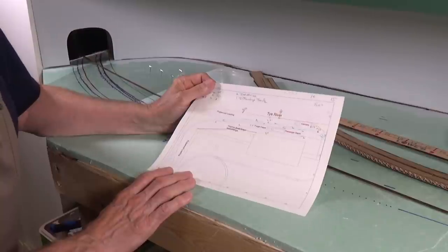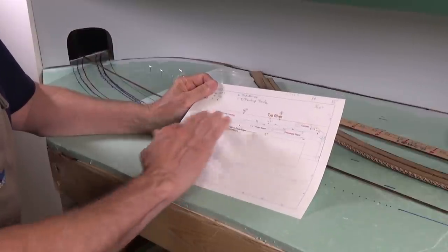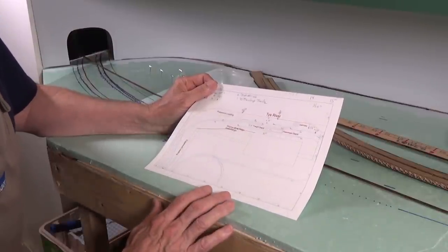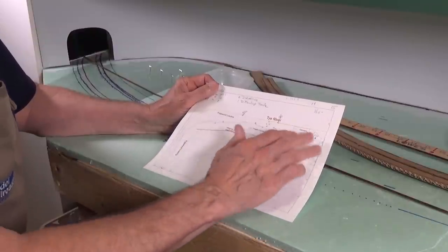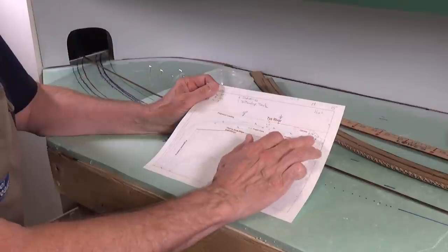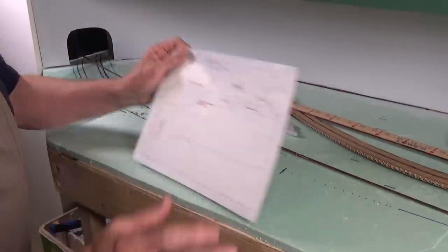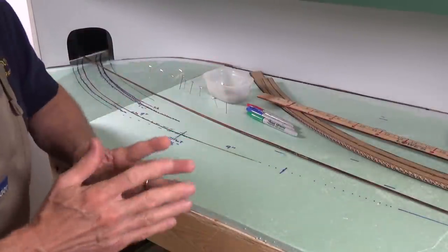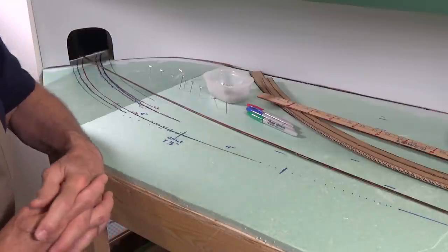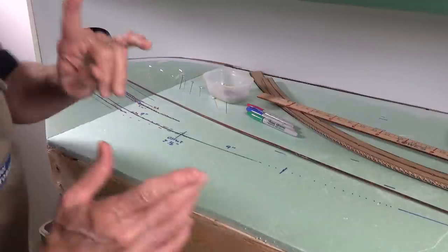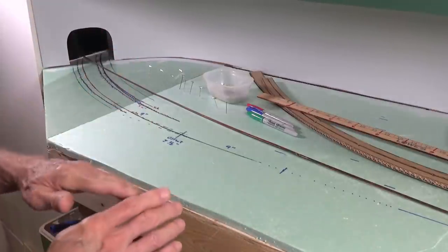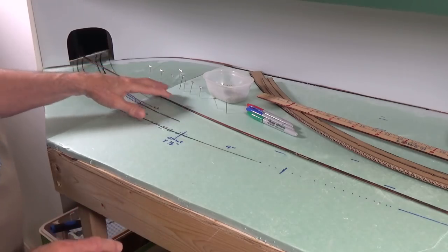Now, I use a program called CADRail on my computer to design my entire layout. And the great thing about it is it has the ability to design these easements or transitions into the curves. But there's another easy way that you can use on your model railroad to build those easements into your curves. But first, let's go ahead and take a look at how do you go about setting up a curve.